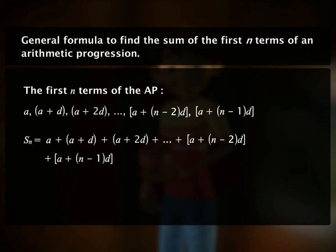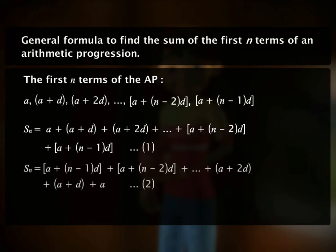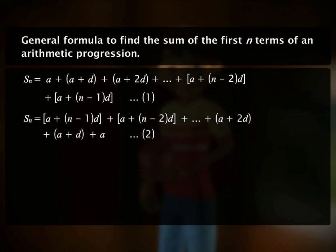Let's denote the sum as Sn. We write the sum in reverse order as shown. Now, we add the two equations 1 and 2 as shown here.